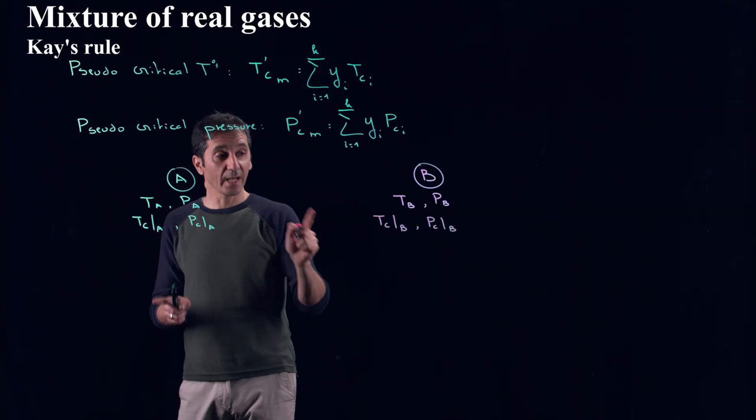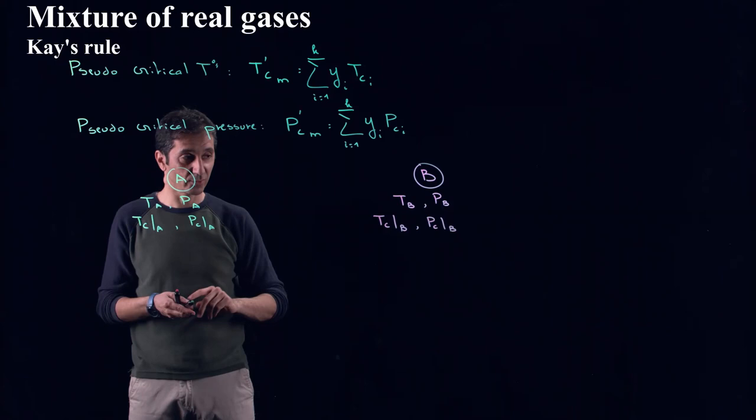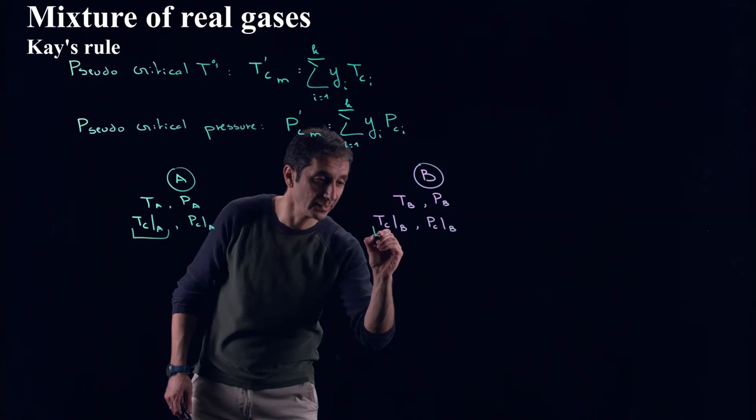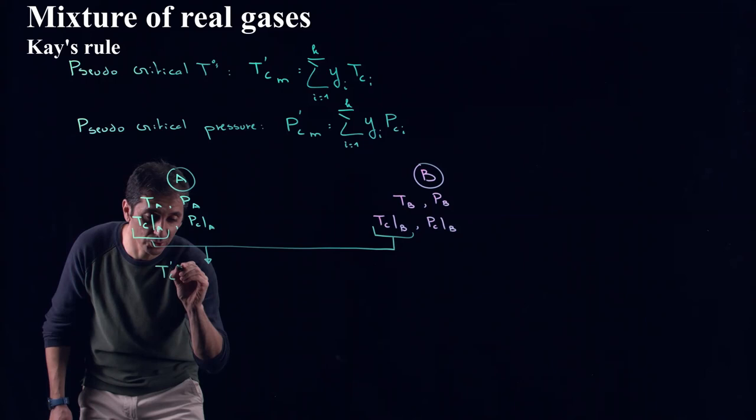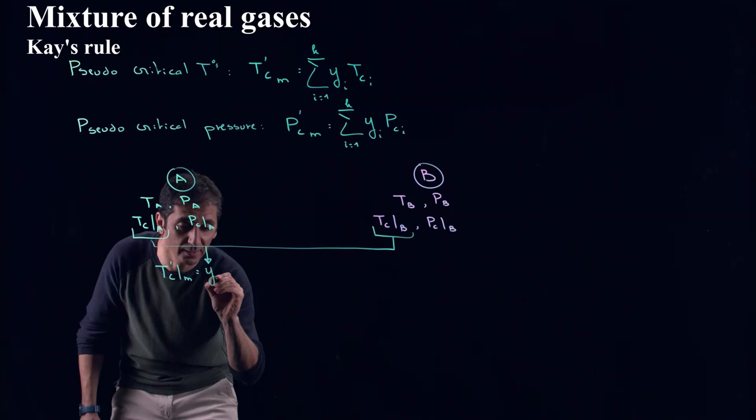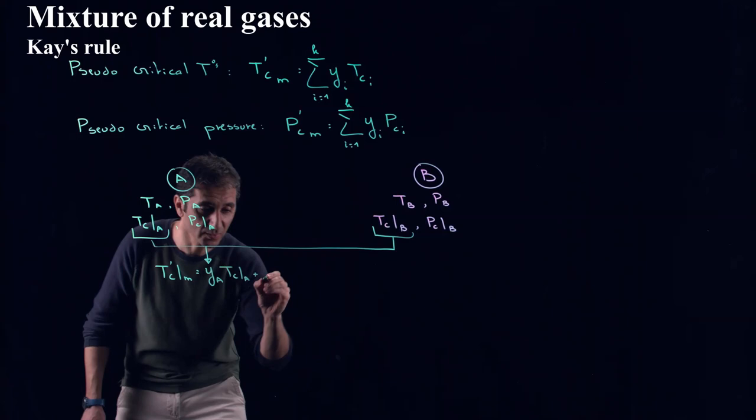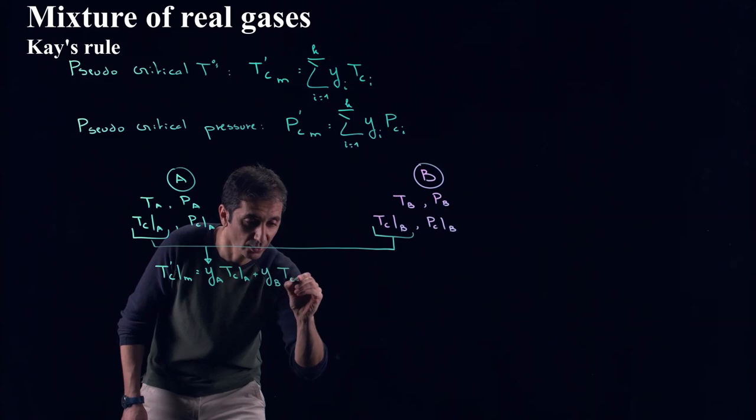So now we have to calculate our pseudocritical temperature and pseudocritical pressure. We calculate now our pseudocritical temperature of our mixture of A and B as equal to YA times critical temperature of A plus YB times critical temperature of B.